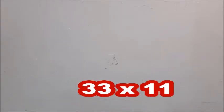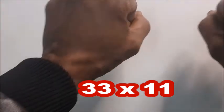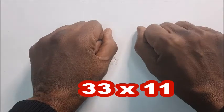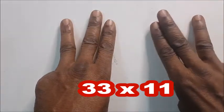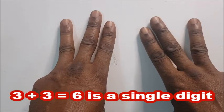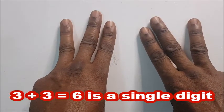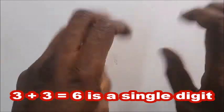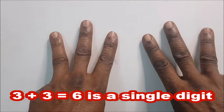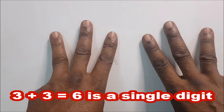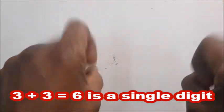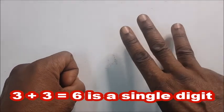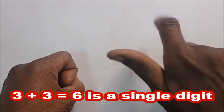If you are given 33 times 11, the first thing you have to do is add 33. You add them up, 3 plus 3. 3 plus 3, that is 6.